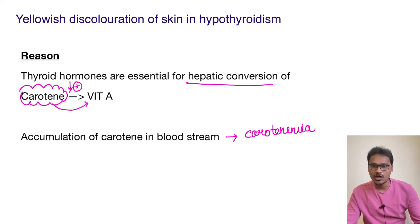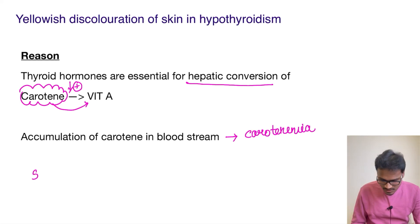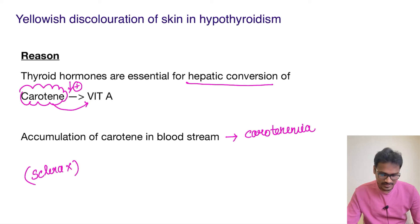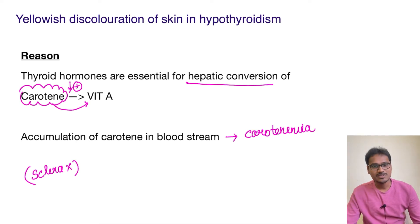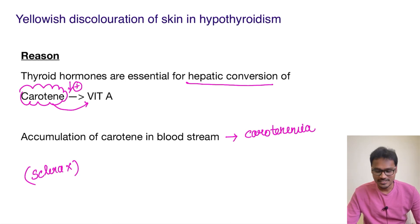In jaundice there is involvement of the sclera, but in hypothyroid patients there is no involvement of the scleral membrane. This helps us differentiate the yellowish discoloration that occurs in hyperbilirubinemia from that in carotenemia. Thank you for listening, we will see you in the next video.